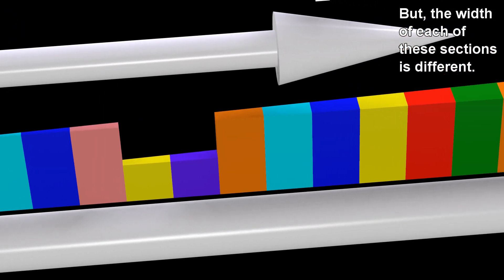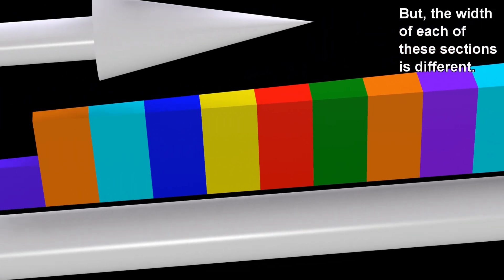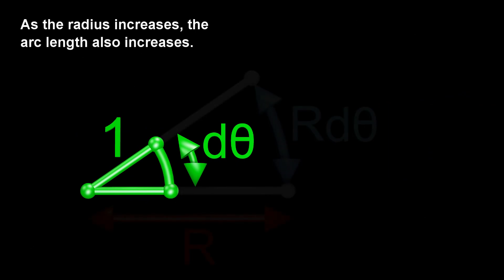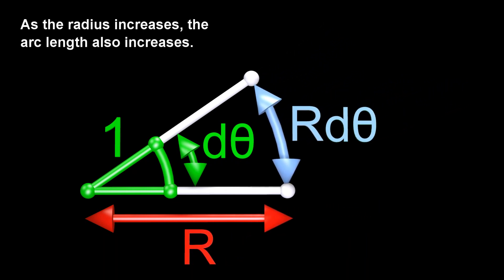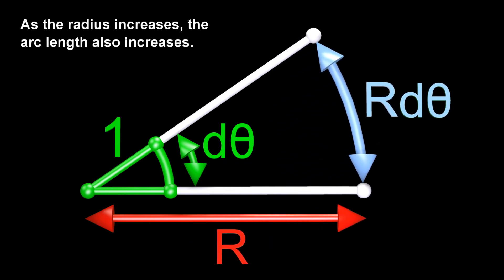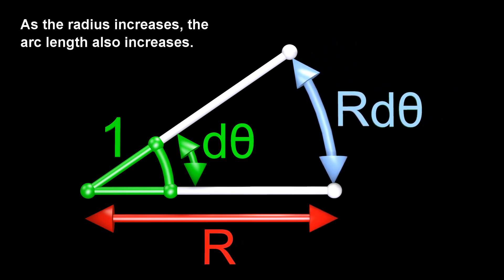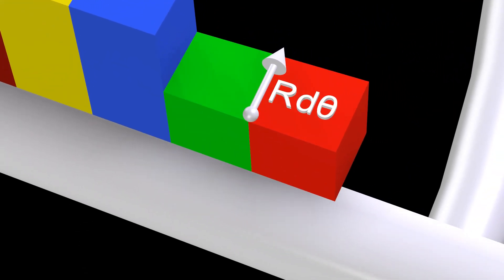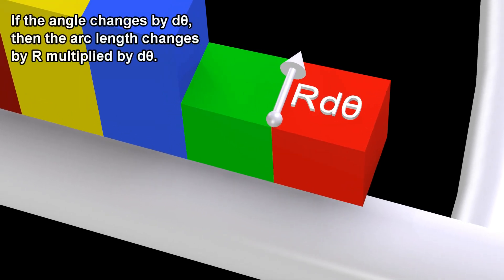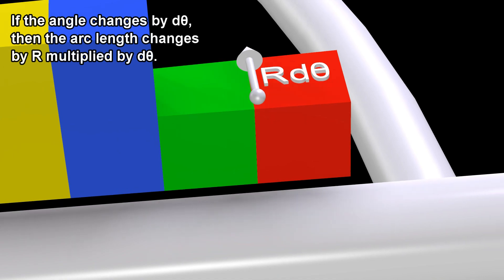But the width of each of these sections is different. As the radius increases, the arc length also increases. If the angle changes by dθ, then the arc length changes by R multiplied by dθ.